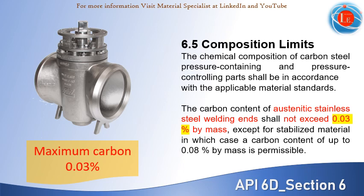One of the most important restrictions concerns austenitic stainless steel welding end valves, in which the carbon content shall not exceed 0.03% by mass. Apparently, this is an effort to avoid intergranular corrosion formation after welding and during operation.